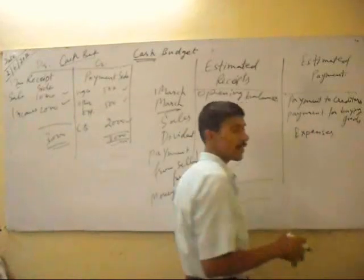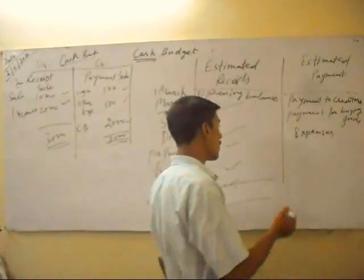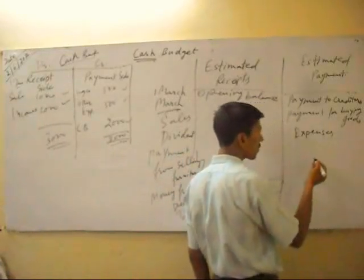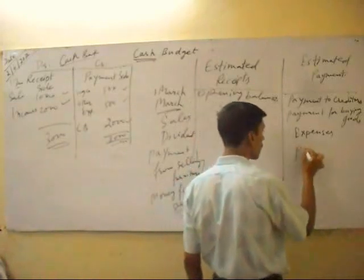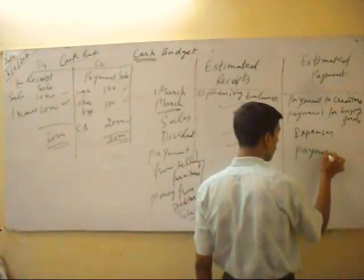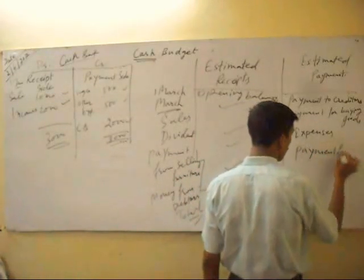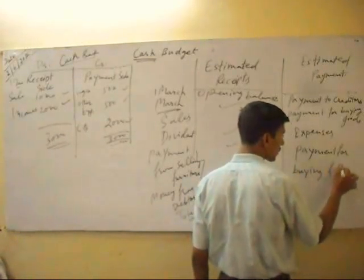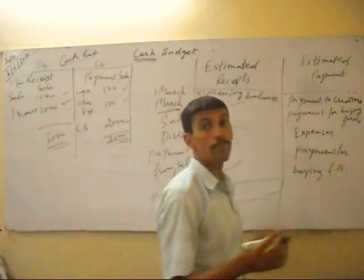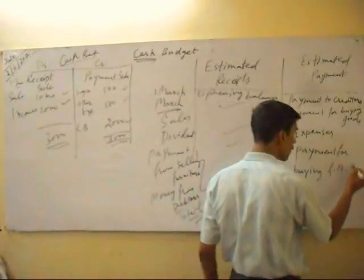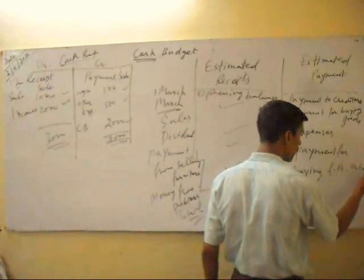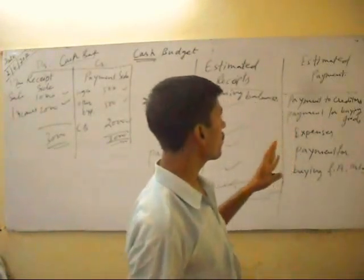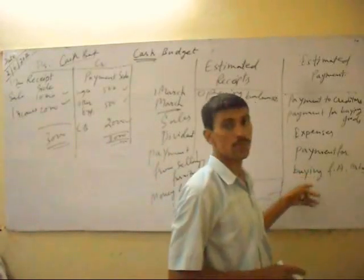Other payments include other expenses, debt expenses, financial expenses, and payment for taxes. All these items' estimated values we have to show here.